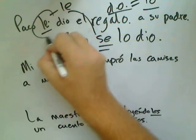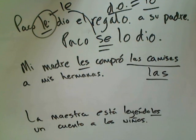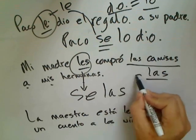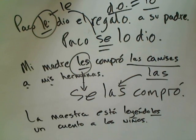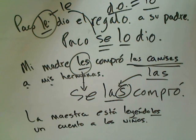Second example: MI MADRE LES COMPRÓ LAS CAMISAS A MIS HERMANAS — she bought the shirts for my sisters. To say 'she bought them for them': MI MADRE SE LAS COMPRÓ. Notice SE refers to to-whom or for-whom and is invariable. LAS can have an S if it's something plural. The order is always indirect object pronoun then direct object: SE LO, SE LAS.